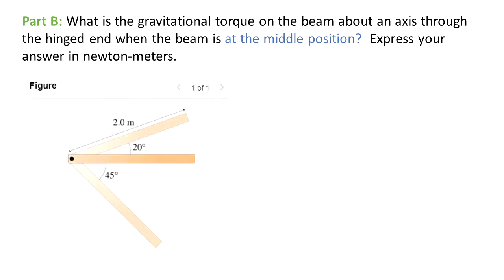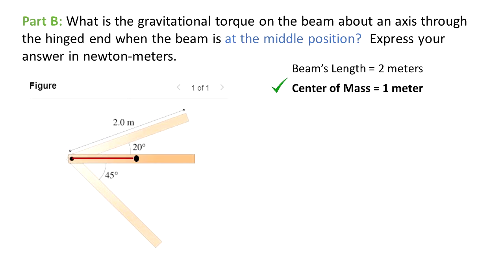For part B: what is the gravitational torque on the beam about an axis through the hinged end when the beam is at the middle position? Express your answer in Nm. As you can see, the center of mass is still in the center — one meter from the hinged end — but the beam is now in a horizontal position.